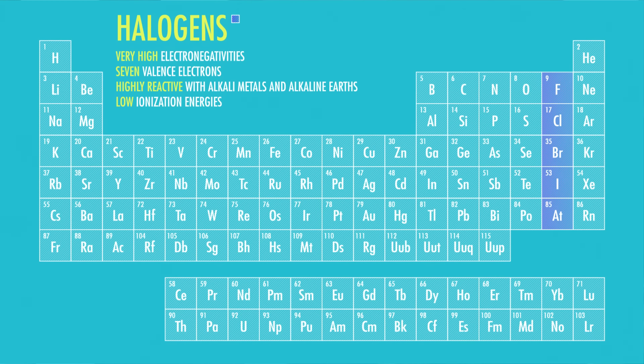On the far right, just over from the noble gases, the halogens make up a set of extremely reactive gases that form negative ions or anions with one negative charge, and love to react with the alkali and alkaline earth metals.